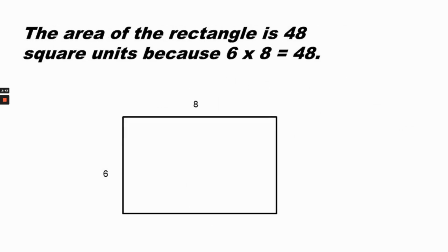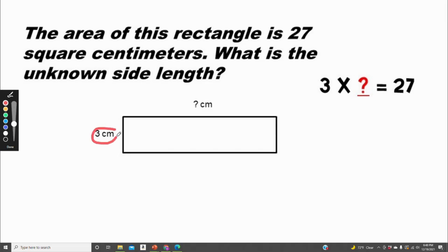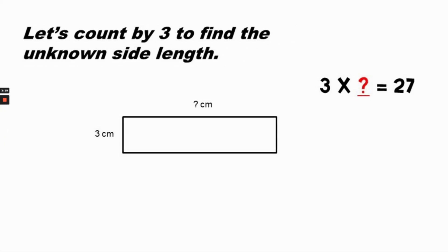The area of the rectangle is forty-eight square units because six times eight equals forty-eight. The area of this rectangle is twenty-seven square centimeters. There are three centimeters on one side, so the first factor is three. The product is twenty-seven. What number can we multiply by three to get twenty-seven? Let's count by three to find the unknown side length.